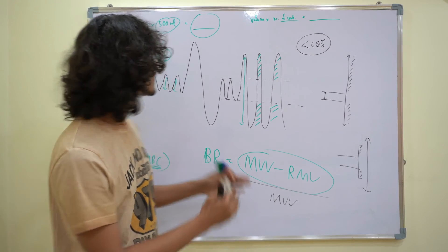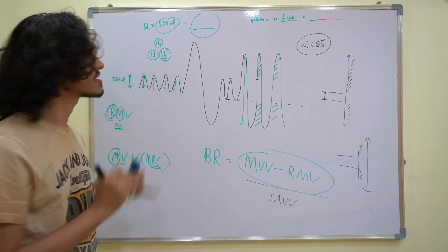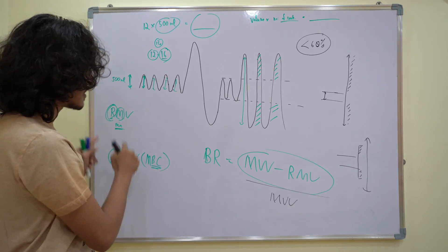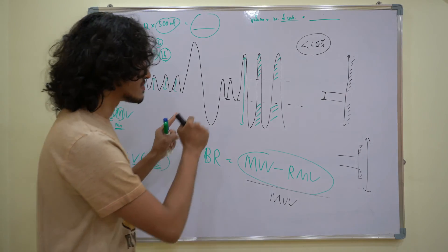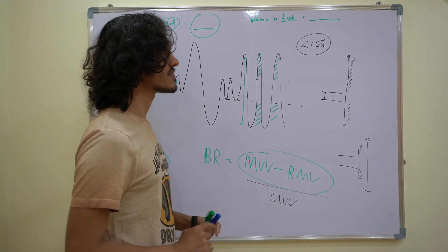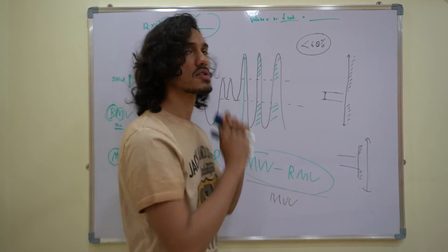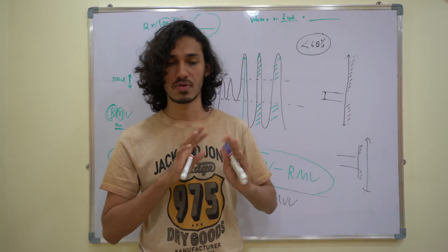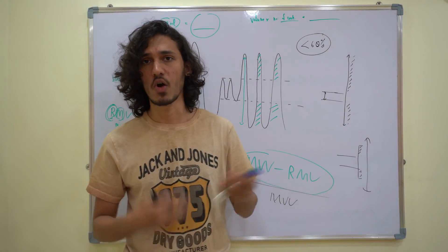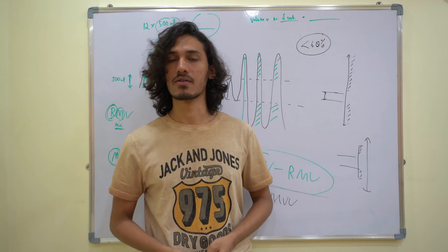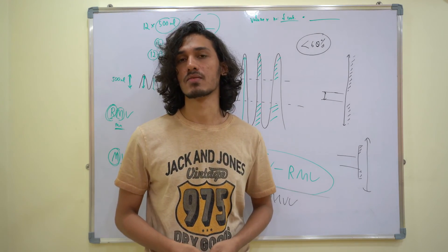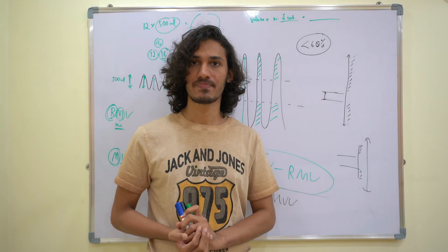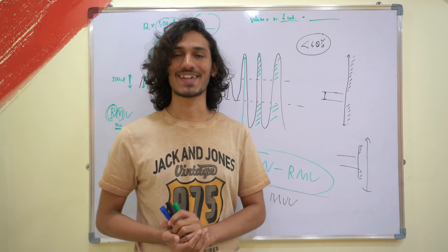So we have respiratory minute ventilation, maximum voluntary ventilation, breathing reserve, and the dyspneic index. Questions on calculating these will come for MCQ, so you just need to understand all these things.